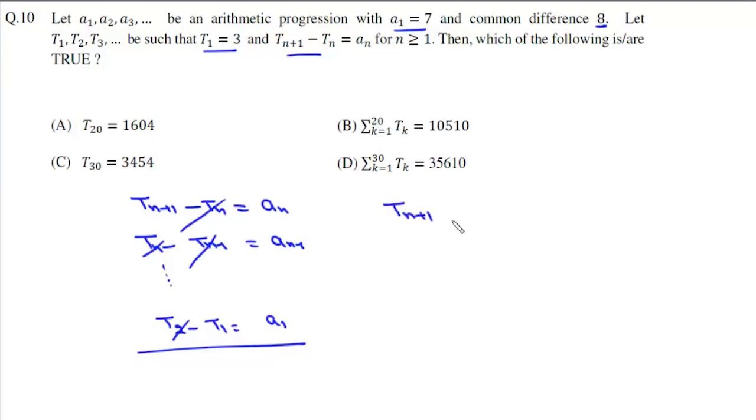So from here we will get Tₙ₊₁ - T₁ equal to this series, which is a₁ + a₂ + ... + aₙ, which is nothing but the sum of first n terms of this AP. This is Tₙ₊₁ - T₁.